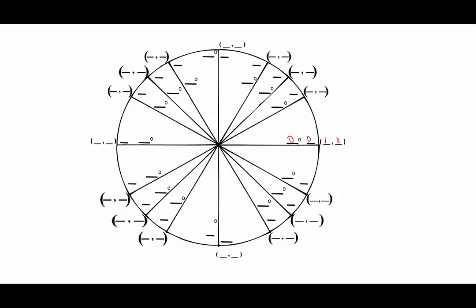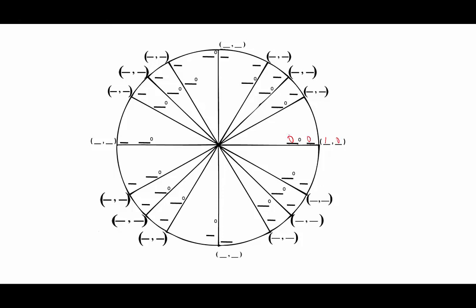The next one is 30 degrees. You might recall that 30 degrees is equivalent to pi over 6. If you weren't sure, you'd take 30 degrees and multiply by pi over 180 to get the radian measure — the degrees cancel, giving us pi over 6.